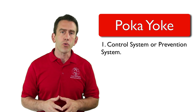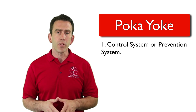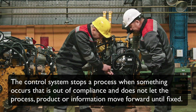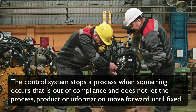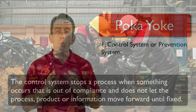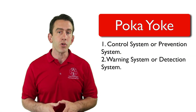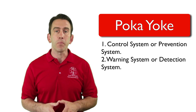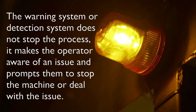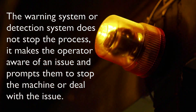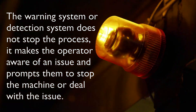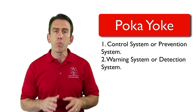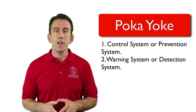Poka-Yoke does this two different ways. The first is a control system, or prevention system. The control system stops a process when something occurs that is out of compliance and does not let the process move forward. The warning system, or detection system, does not stop the process. Wherever possible, a control system should be used.